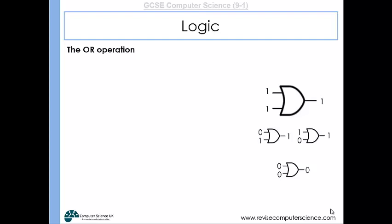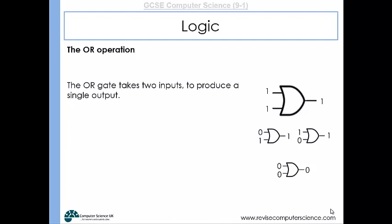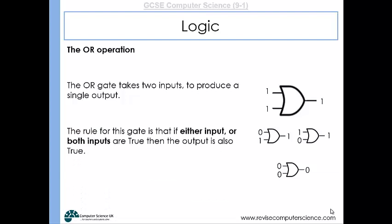The final gate we need to know about is the OR gate, which looks a little bit like a half moon. The OR gate takes two inputs and produces a single output, just like the AND gate, but the rule is slightly different. If either of the inputs, or both of the inputs, are true — are one — then the output will also be true. When both A and B are zero, the output is zero. The shorthand is: Q equals A OR B.